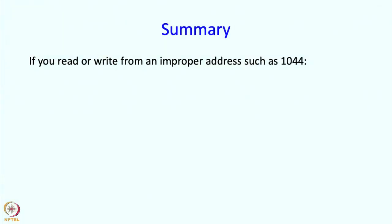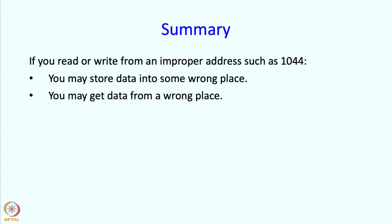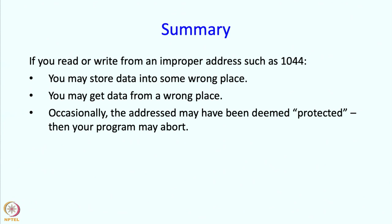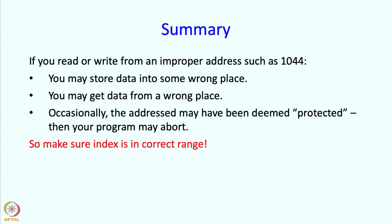But there is a little bit more to be said. If you read or write from an improper address such as 1044, you may store data into some wrong place or read data from a wrong place. And sometimes C++ or your computer hardware may say that some addresses are protected. Why are they protected? Because they may contain code, and you do not want programs to be writing data into the code region of memory or the program region of memory. If your program tries to do that, the hardware will raise an alarm and cause your program to abort. So any of these things could happen, and therefore make sure that the index is in the correct range.